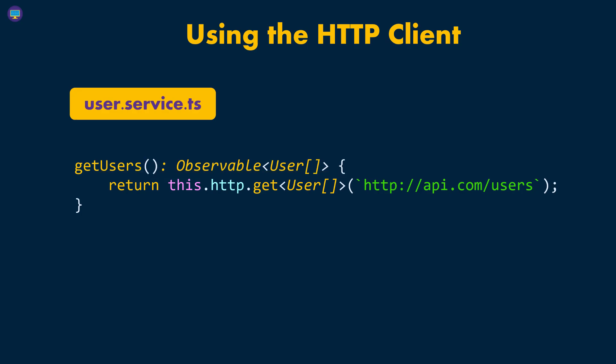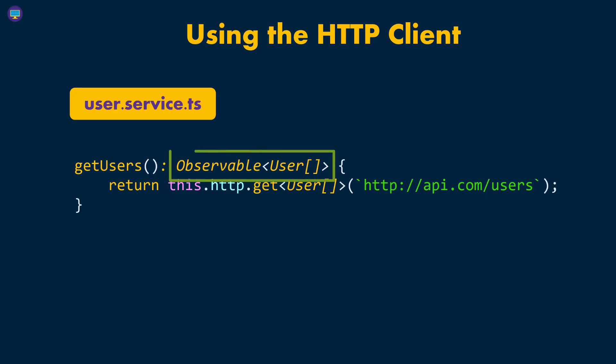As you can see here, our function name is defined — in this case, that's getUsers — and it doesn't take any parameters. Notice one interesting thing: the return type, which in this case is the Observable.